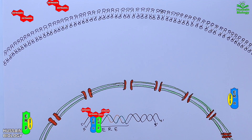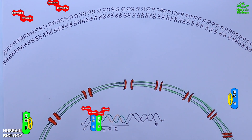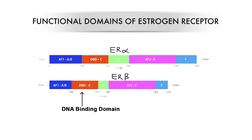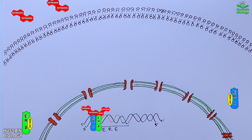The receptor dimer binds the DNA molecule in the nucleus. The functional domains of ERα and ERβ include the Activation Factor Domain 1, DNA Binding Domain, HSP Binding Domain, Activation Factor Domain 2, and Terminal Domain. The DNA Binding Domain facilitates binding to DNA, and upon this binding, the active receptor drives transcription of estrogen response genes, which are ultimately translated into functional proteins.